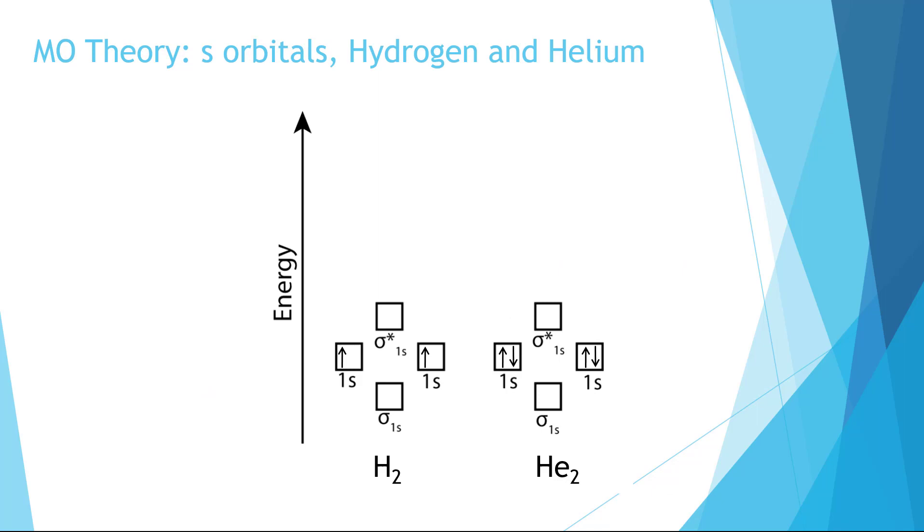Of course, drawing these cartoon pictures every time we wanted to talk about energy levels would get a little bit unwieldy. So, just like we drew simpler energy level diagrams for atomic orbitals, we can draw them for molecular orbitals. This is what the base structure of the diagram would look like. Notice the energy level arrow off to the side.